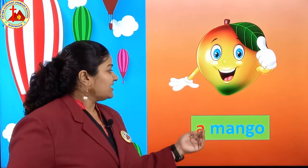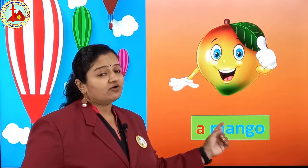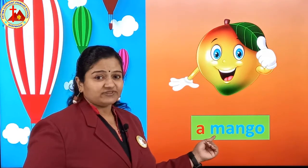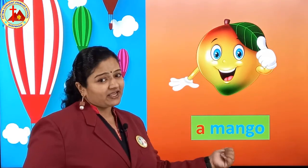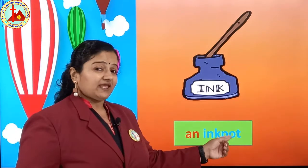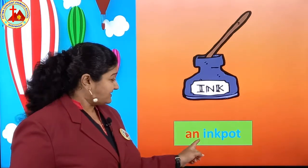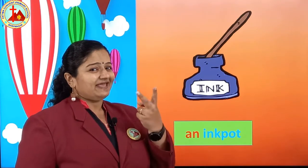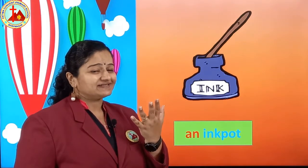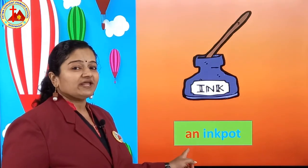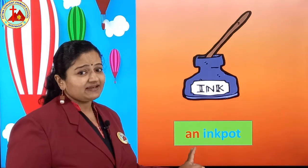Next one is mango — yummy fruit. M, A, N, G, O, mango. First letter is M. M is not a vowel. So before mango we put A. Next one is ink pot. I is the vowel, so before vowel we will put AN. An ink pot.